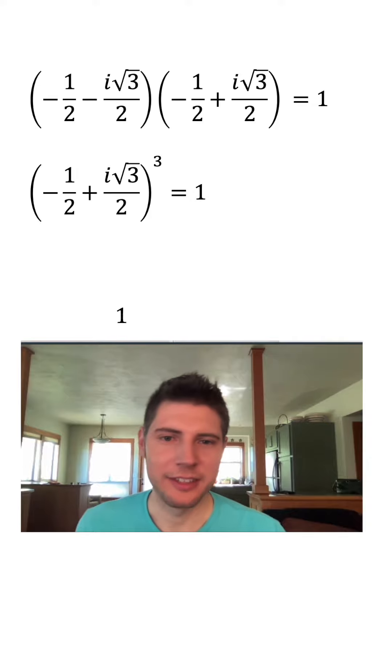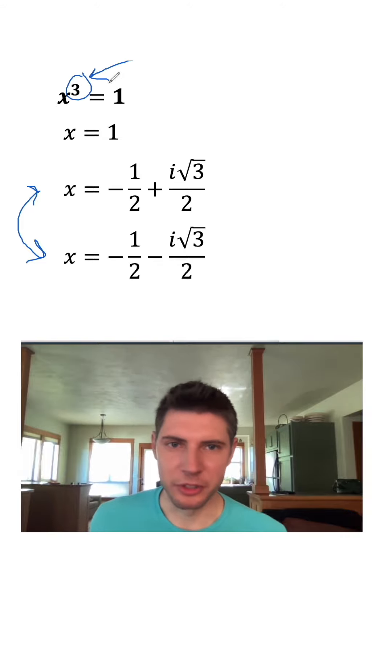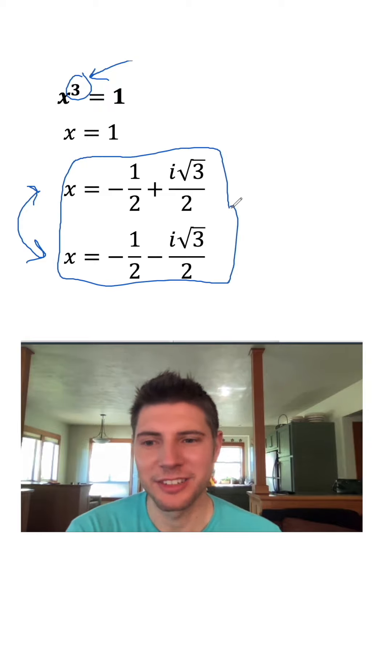We showed that this cubed is equal to one. So the same thing is true for the other one. There are three solutions. This is true for any polynomial equation. Whatever the degree is, is how many solutions there are. It's just some of those solutions might be weird, complex numbers.